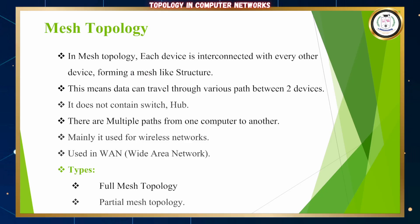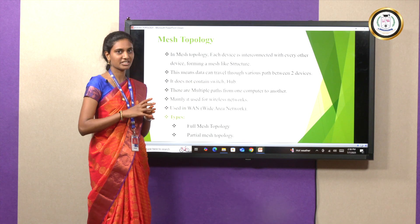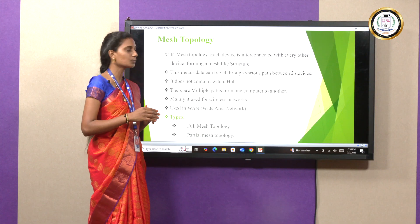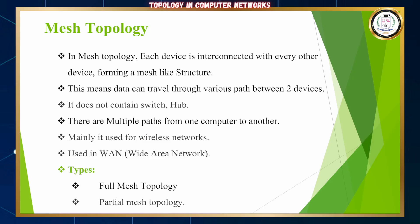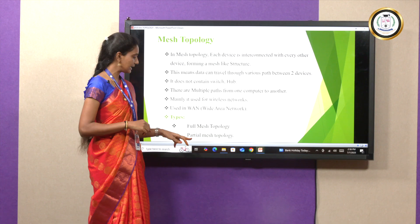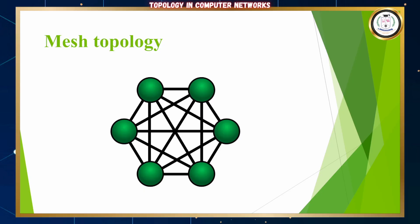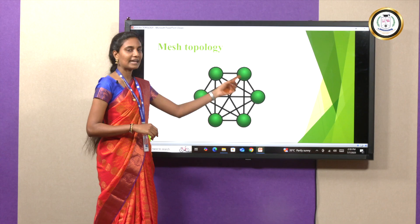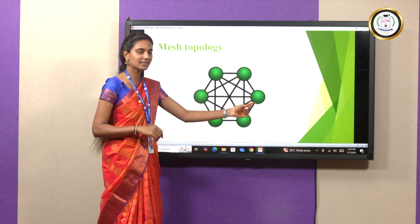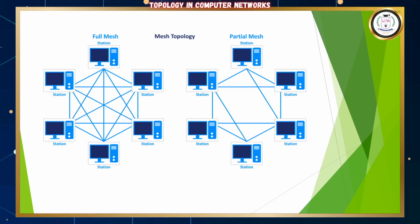The next one is mesh topology. In mesh topology, each device is interconnected with every other device, forming a mesh structure. Data can travel through various paths between two devices. It does not contain a central hub or switch; there are multiple paths from one computer to another. In the diagram, all devices are interconnected, so if the first device wants to send a message to the third device, it can directly send the message without any other device's help.